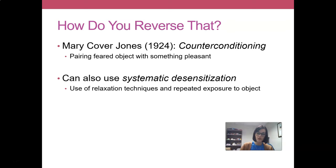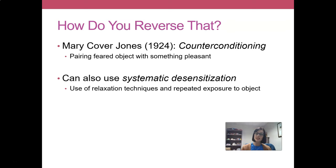You can also utilize counter-conditioning for people who are struggling with addiction, in particular addiction to alcohol. Often people have very pleasant associations with drinking. You can utilize counter-conditioning — in this case, you give them a drug known as disulfiram, sold under the brand name Antabuse, and it will make them sick if they drink alcohol. You take something that had pleasant associations, apply this drug that makes them sick when they drink, they associate those negative feelings of sickness with the alcohol, and hopefully they're able to avoid it. Counter-conditioning can work both ways.